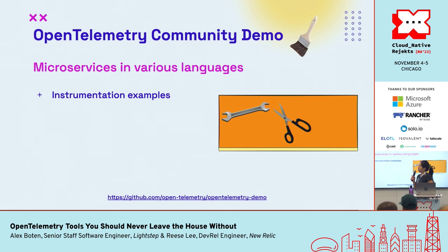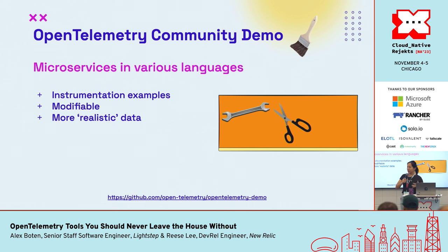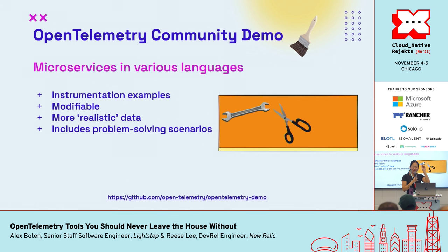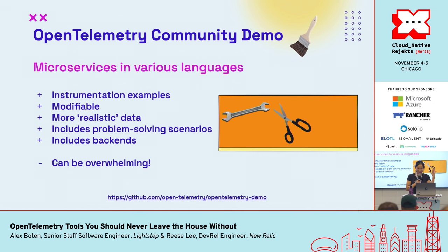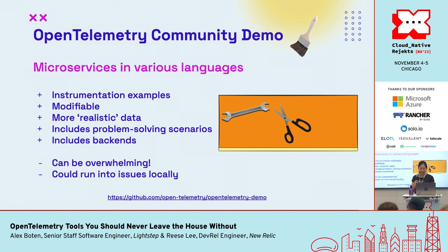The demo is great as a next step before you try OpenTelemetry with your own applications. You can use it to view various instrumentation examples in different languages, modify it to test and experiment, and it provides more realistic data that you would see in a production environment. It includes a few problem-solving scenarios to help you interpret your OTEL data. It also includes backends, but you can change who gets the data. However, it can be very overwhelming — there are a lot of pieces, and you might run into issues trying to run it locally.